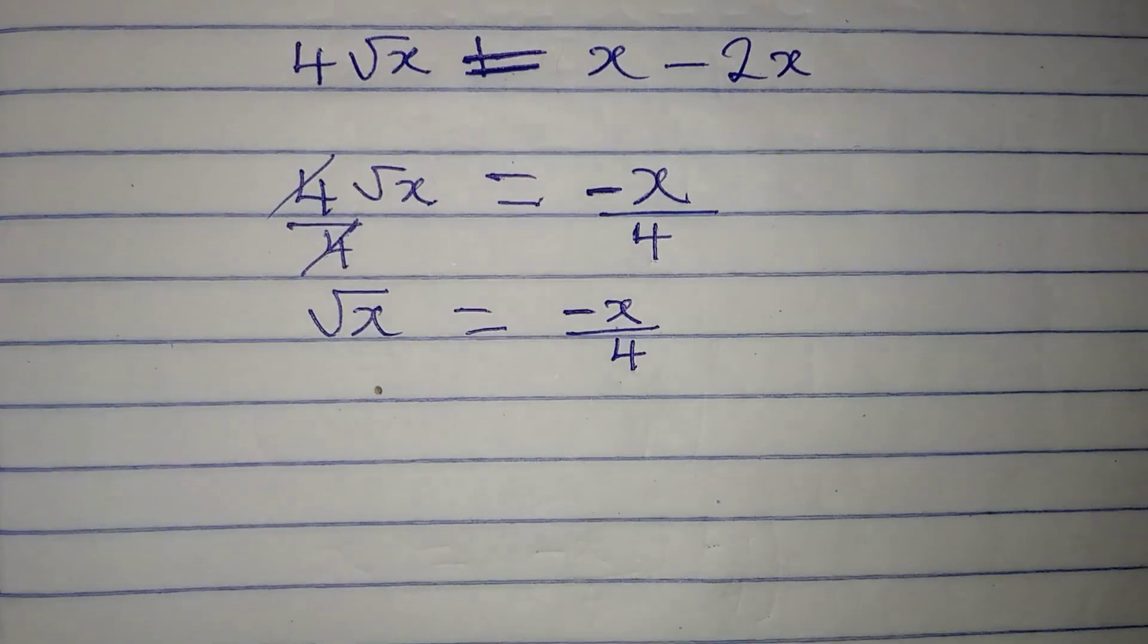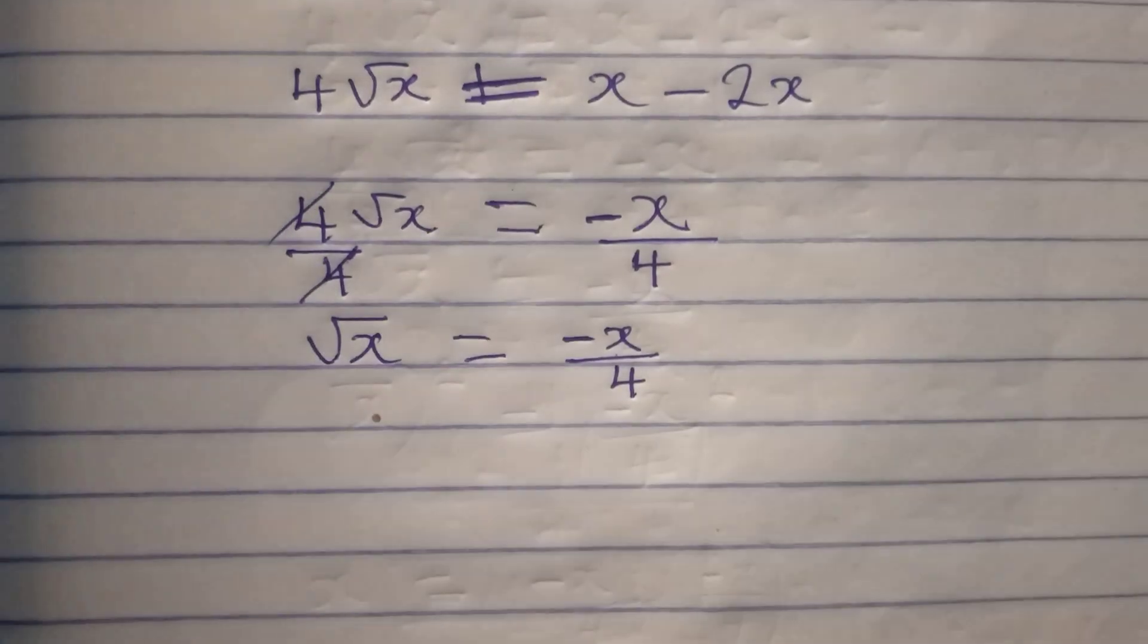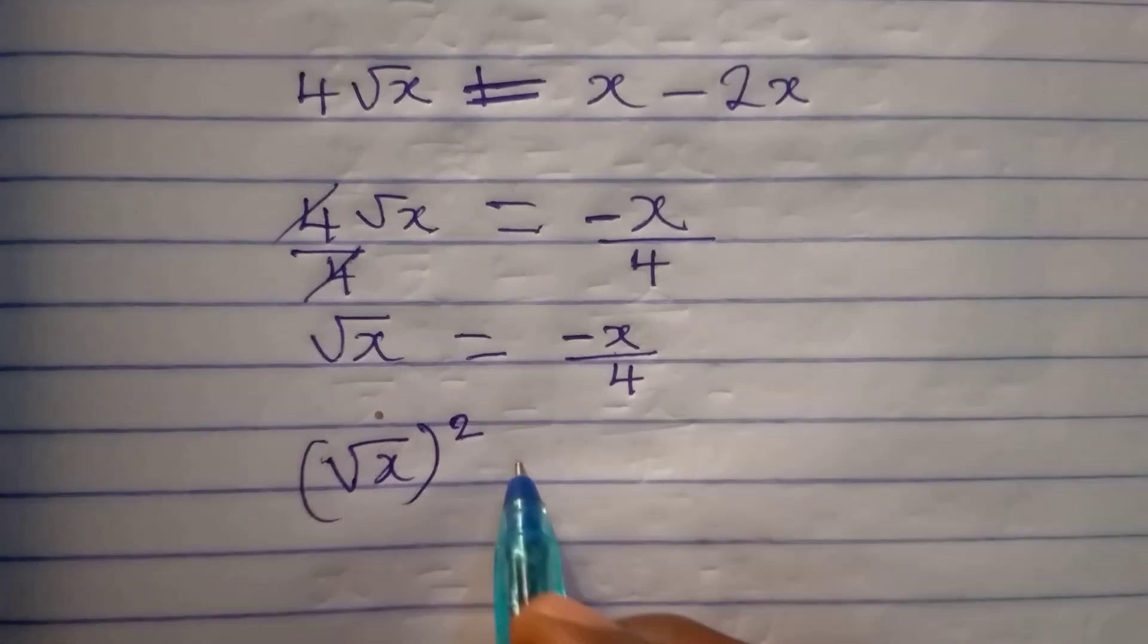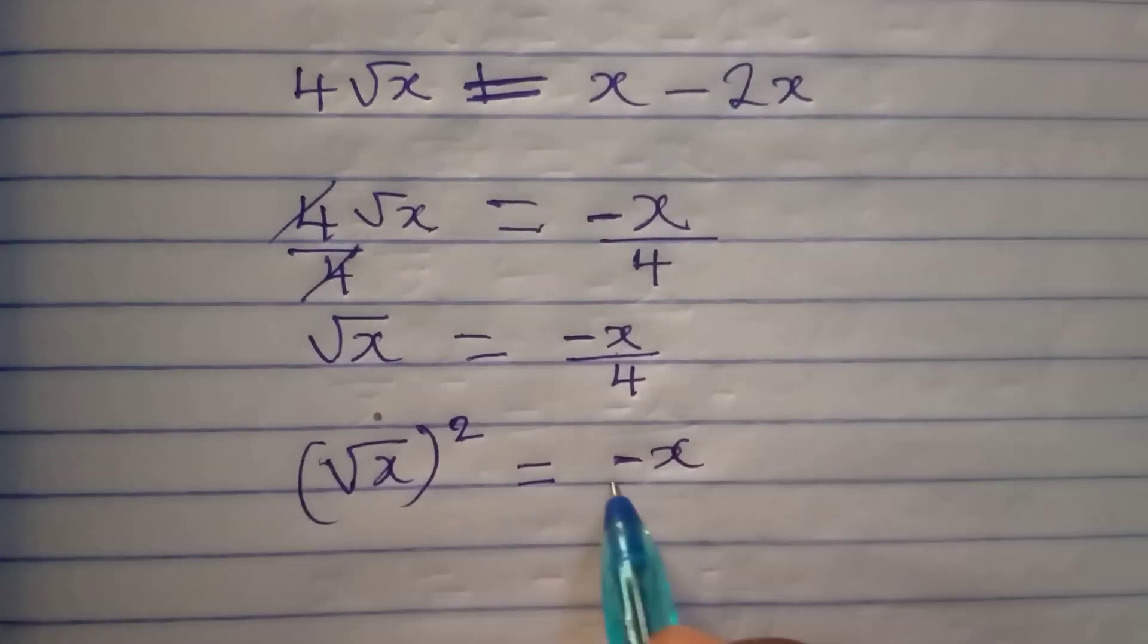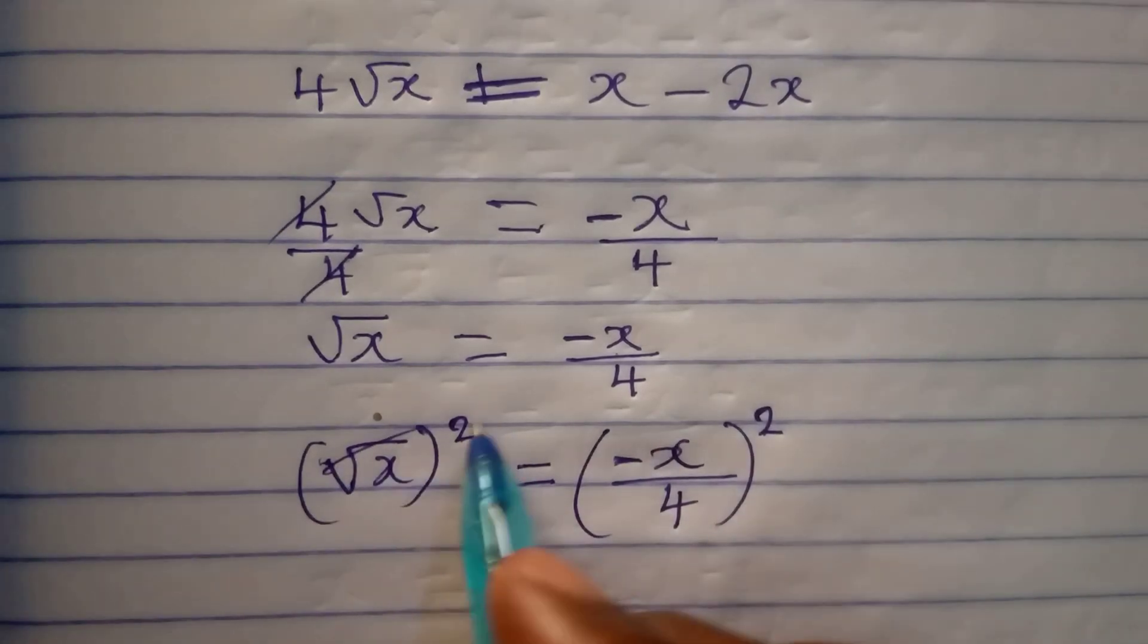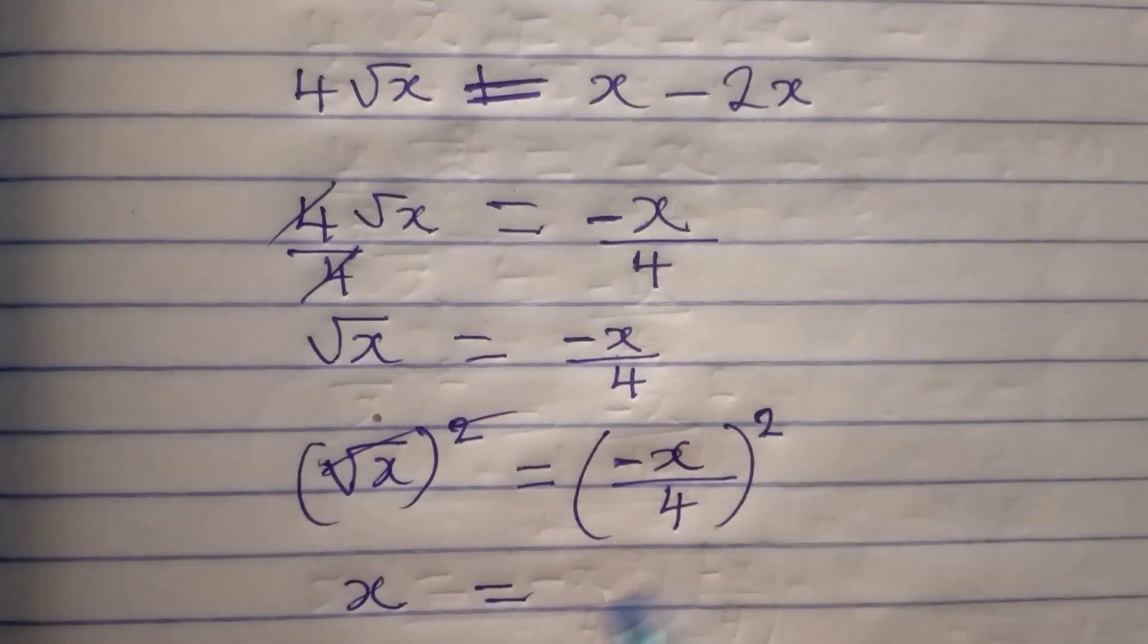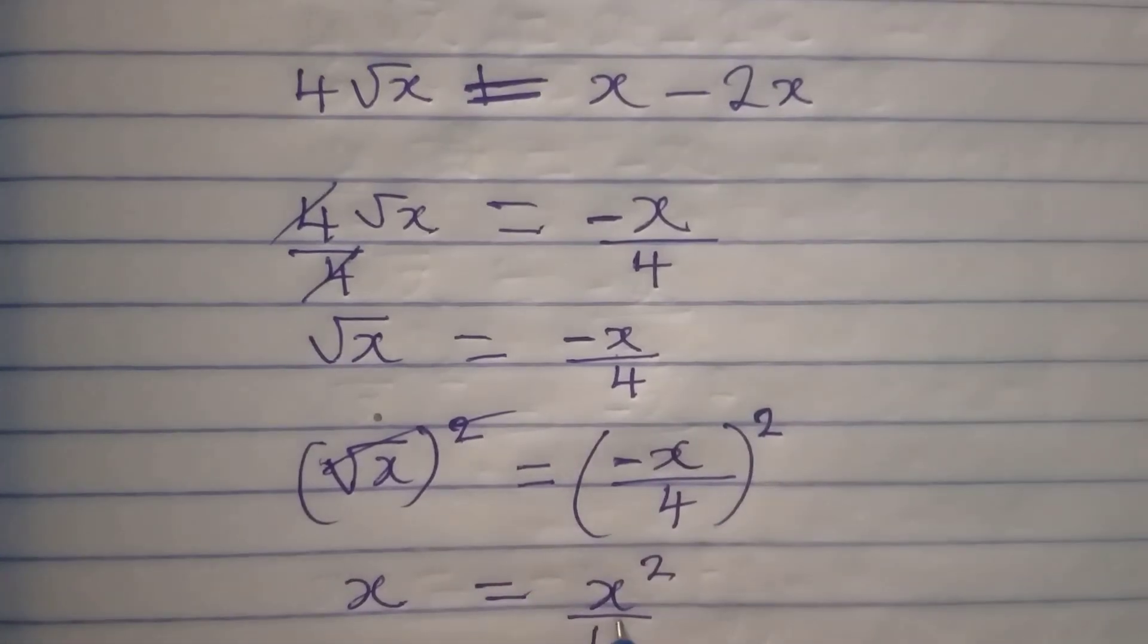The next I will do is to remove the square root sign and it goes to the other side as square. We have square root of x, we'll square it and it will be equal to minus x over 4 and we square this. This will cancel and x will be alone. It will be equal to minus x squared will give us x squared positive, and then 4 squared will give us 16.